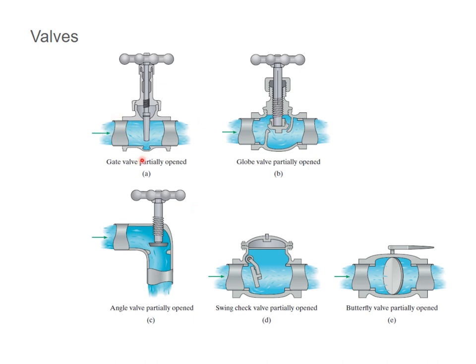Based on the valves, you have to know what they are to find the K sub L value. If the gate valve is partially opened or fully opened, if it's an angle valve partially opened, if it's a swing check valve, or if it's a butterfly valve, each of these situations will have different K sub L values.